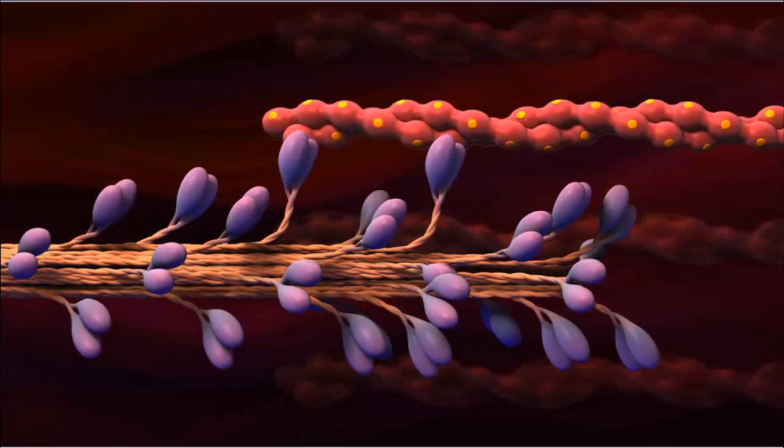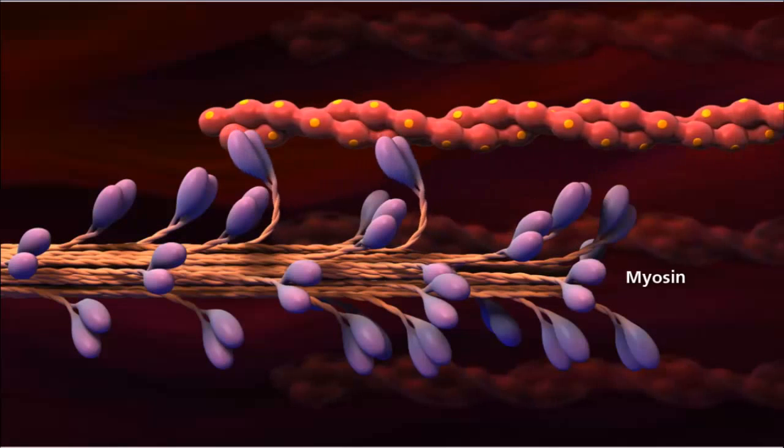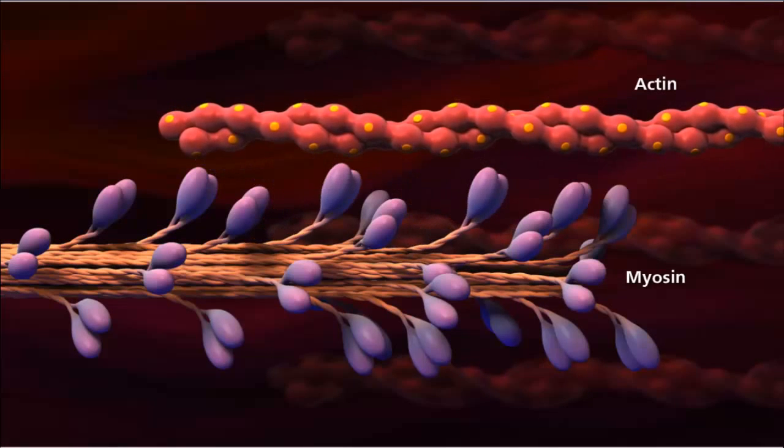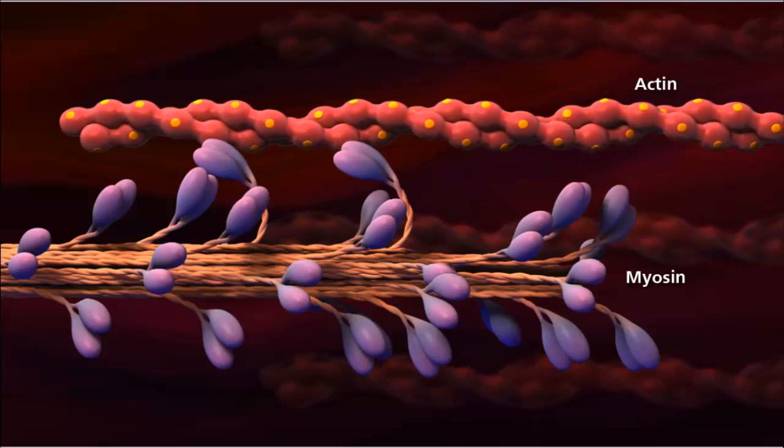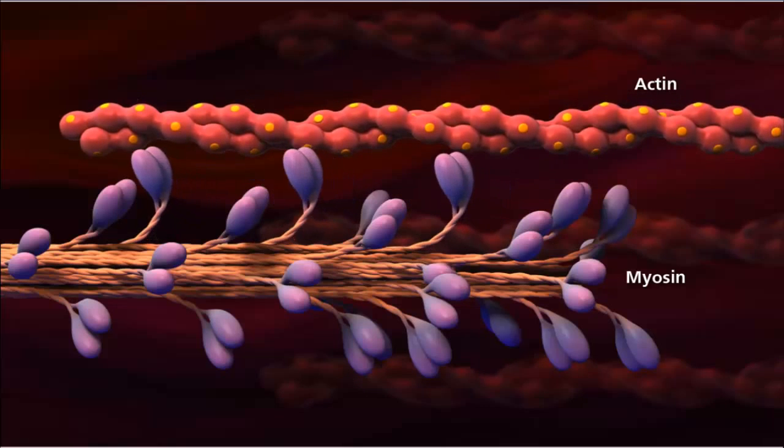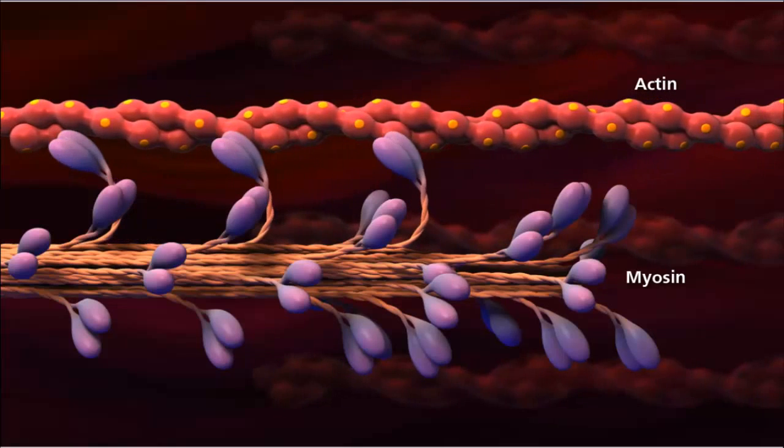Although the action between the filaments is described as sliding, the myosin filament actually pulls the actin along its length. The cross-bridges of the myosin filaments attach to the actin filaments and exert force on them to move. This action is known as the sliding filament mechanism of muscle contraction.